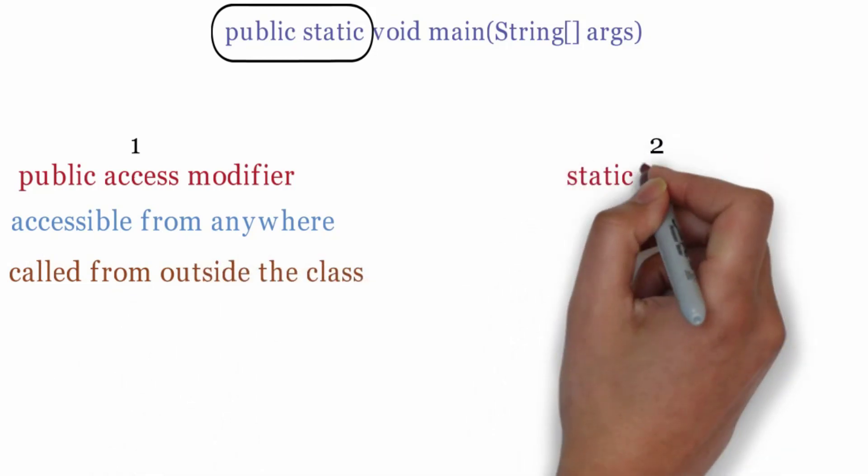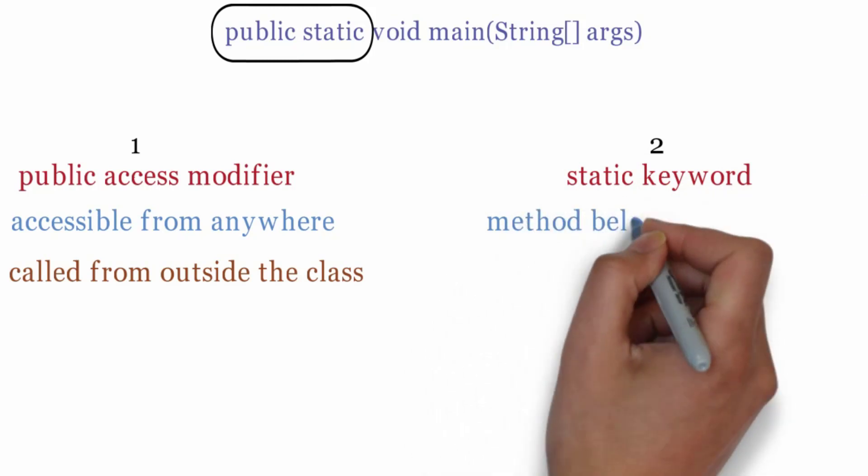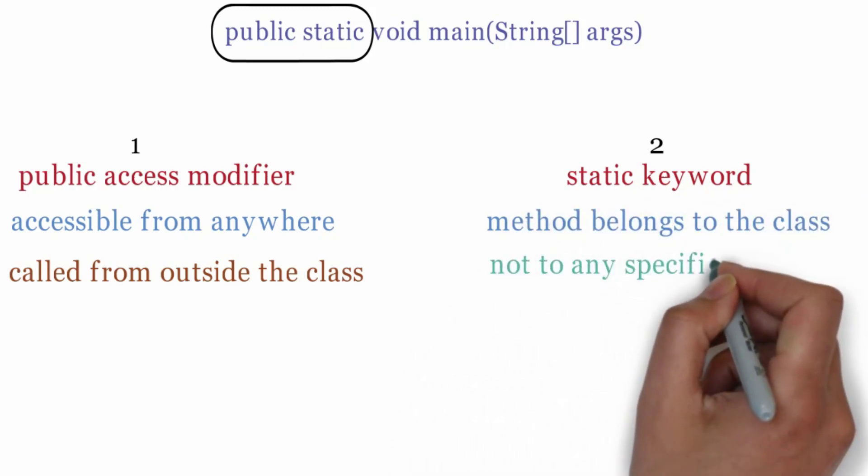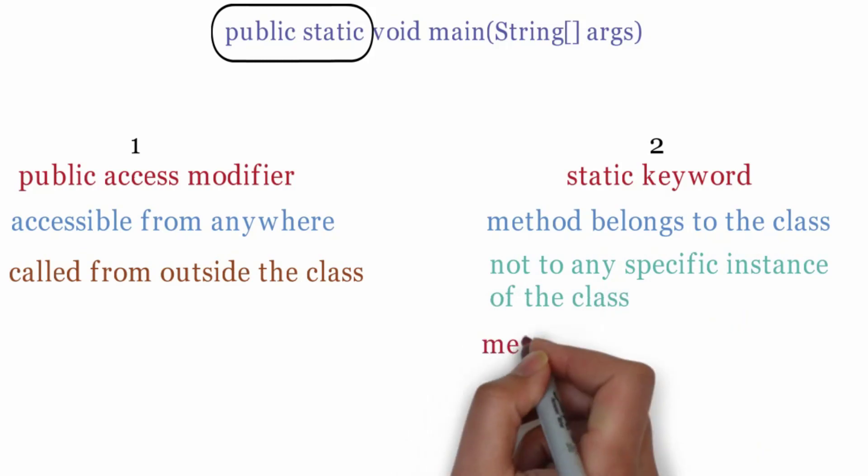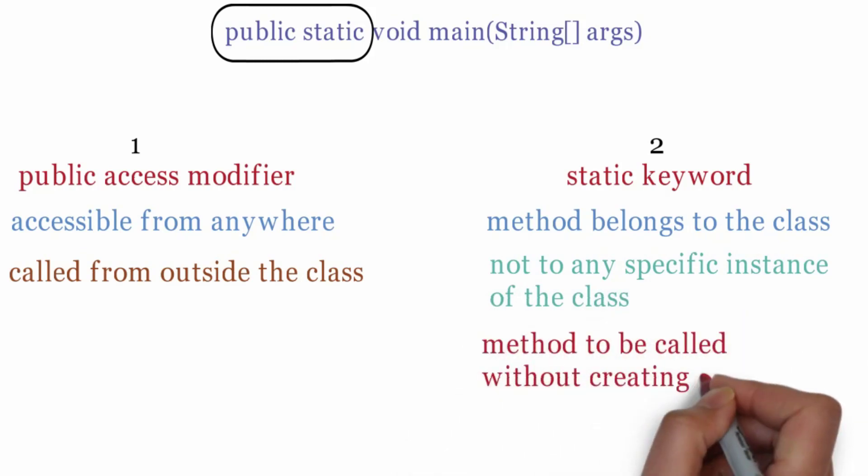Second reason is static keyword. The static keyword means that the method belongs to the class and not to any specific instance of the class. This allows the main method to be called without creating an instance of the class.